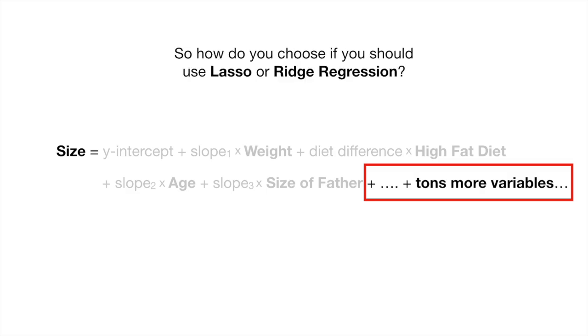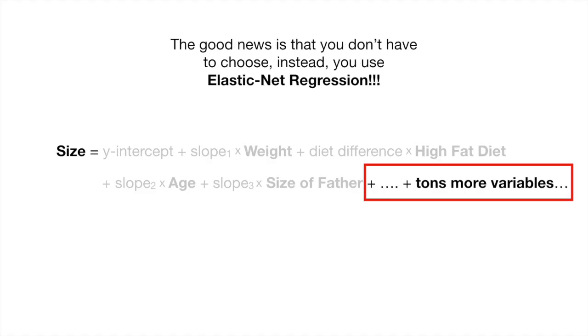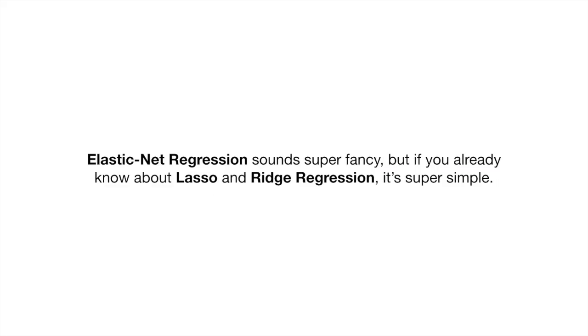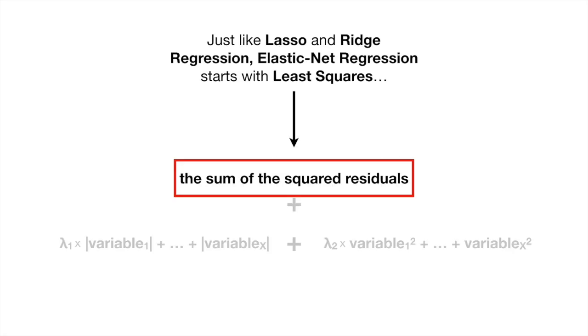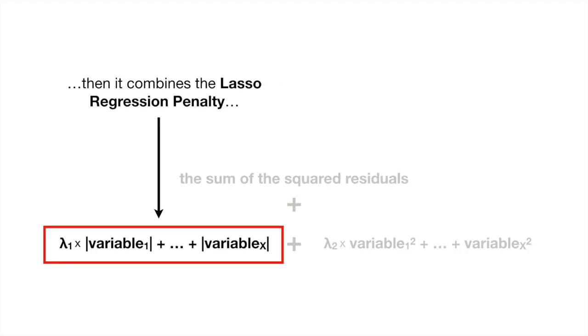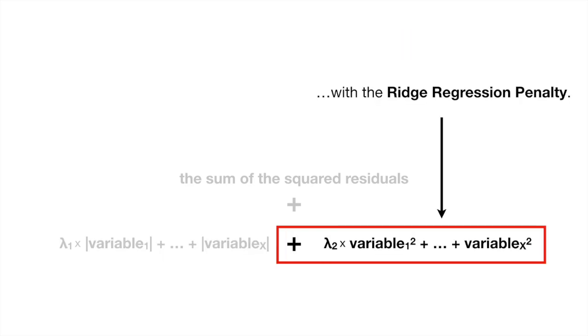So, how do you choose if you should use Lasso or Ridge Regression? The good news is that you don't have to choose. Instead, you use Elastic Net Regression. Elastic Net Regression sounds super fancy, but if you already know about Lasso and Ridge Regression, it's super simple. Just like Lasso and Ridge Regression, Elastic Net Regression starts with least squares. Then it combines the Lasso Regression penalty with the Ridge Regression penalty.